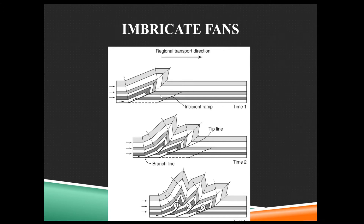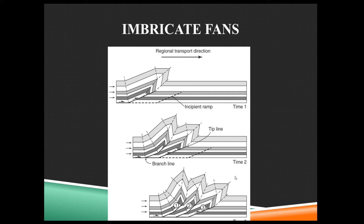So time one, we have one lobe of a fan. Time two, we have a second lobe. By time three, we have a third lobe. There would be another incipient ramp forming if the compressive stress continues. And you can see how we have this kind of lobed formation with a bunch of small — small being a relative term — fault ramps that do not reach all the way to the surface. This is why we call it an imbricate fan, because all these lobes create this fan structure in cross-section.